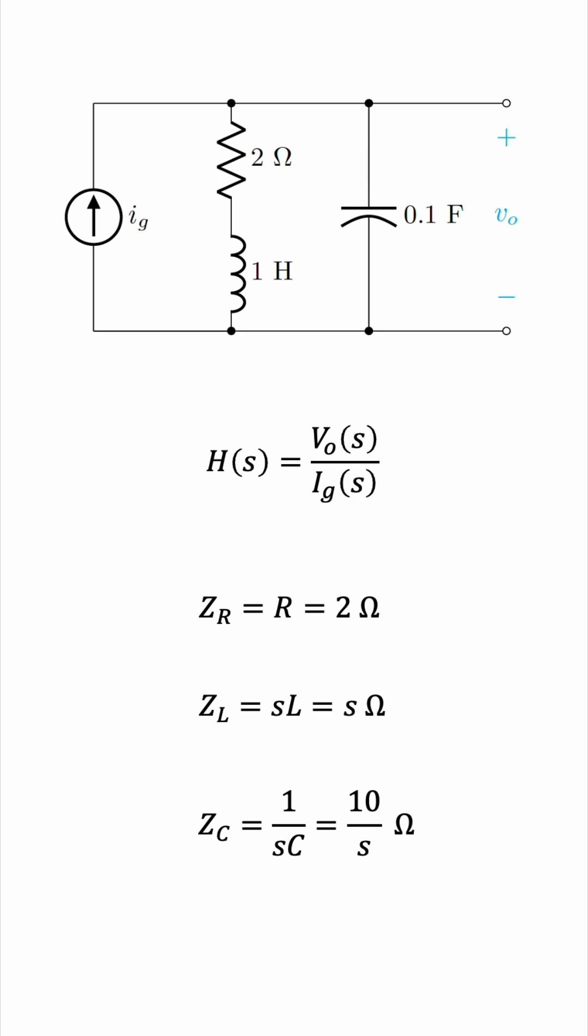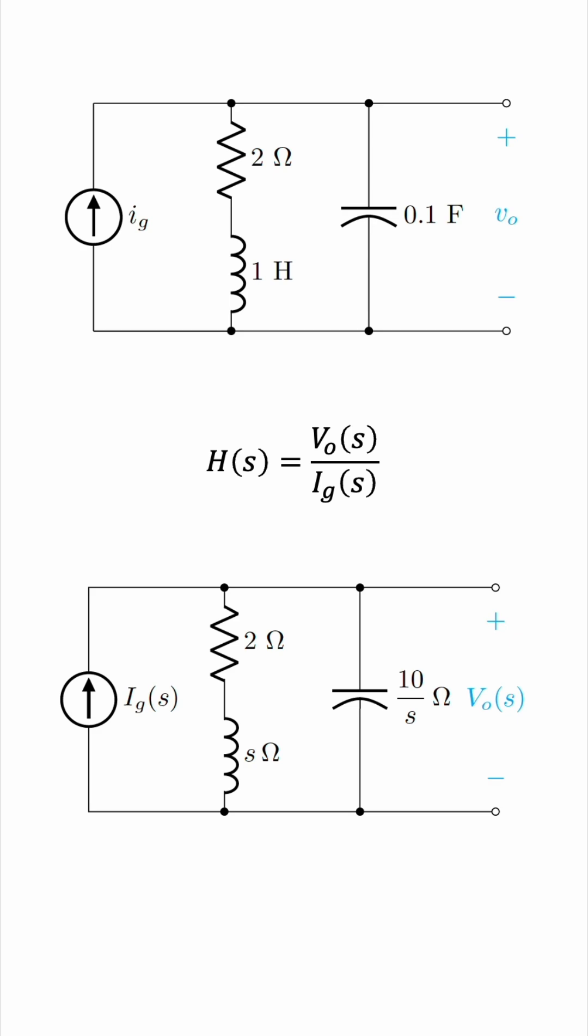So we can redraw the circuit in the S domain like this. Notice the current source is now a capital I, and the output voltage is now a capital V. Important notation.